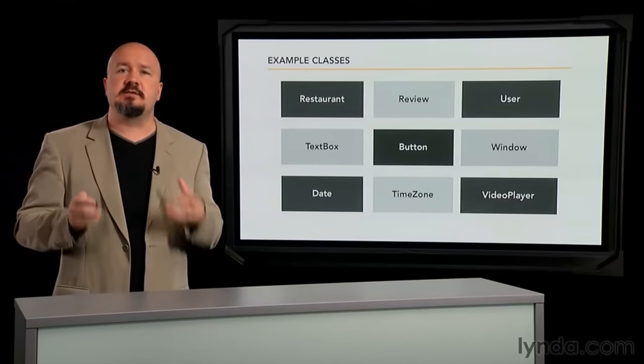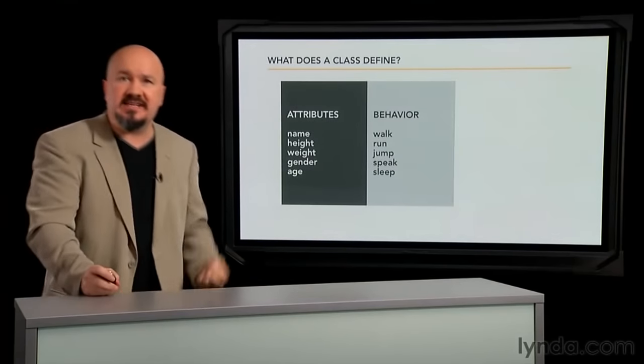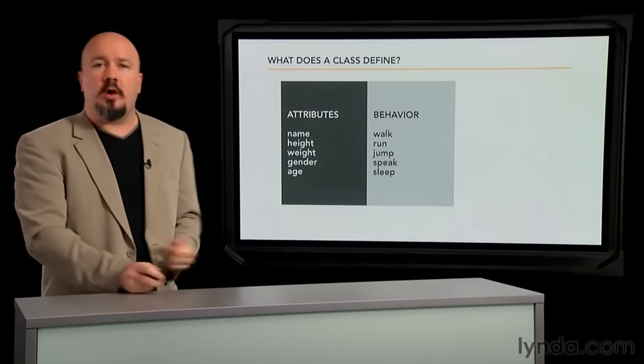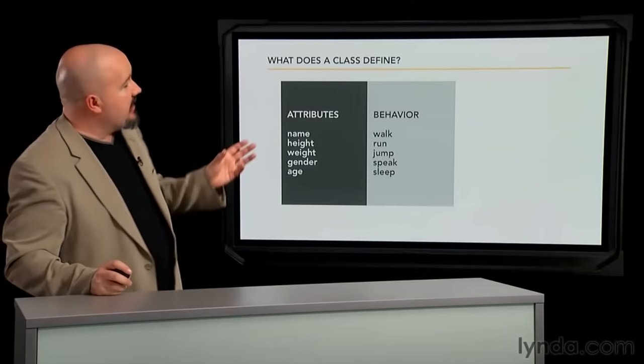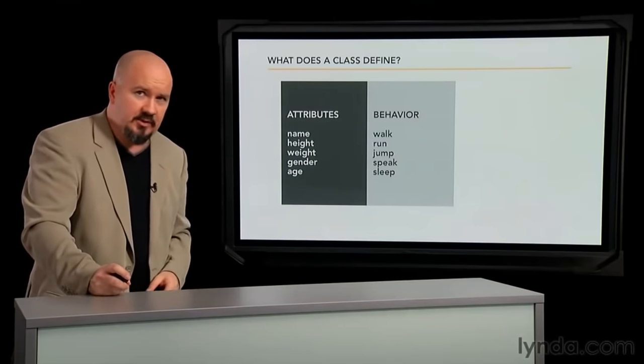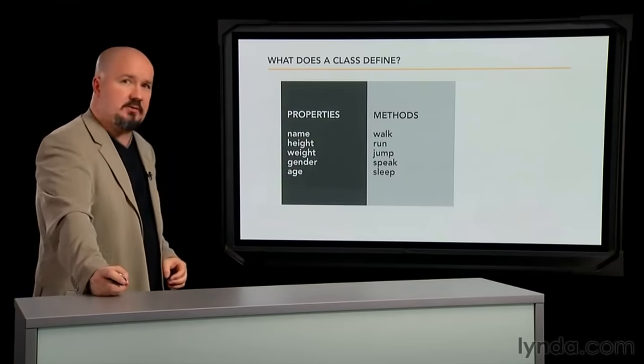Now all classes describe and define two things: attributes and behavior. What are something's characteristics, its attributes, and what can it do? What's its behavior? So in this case, let's say we're describing a class to describe a person. We might say that the person attributes are name, height, weight, gender, and age. Whereas the person's behavior is walk, run, jump, speak, sleep. Think about it this way, that the attributes are really your data, your variables, and the behavior is what can you do, your functions. Now actually, attributes and behavior in most object-oriented languages are actually described with other names, which is properties and methods. These are the most common ways of describing these.